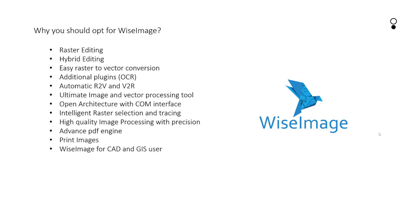Here are a few key points of Wise Image we can have a close look at: raster editing, hybrid editing, easy raster to vector conversion, additional plugins, automatic raster to vector and vector to raster, ultimate image and vector processing tools, open architecture with COM interface, intelligent raster selection and tracing, high quality image processing with precision, advanced PDF engines. There are four different PDF engines in Wise Image, and it supports printing images for CAD and GIS users.